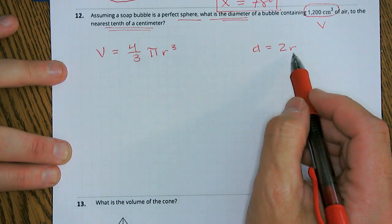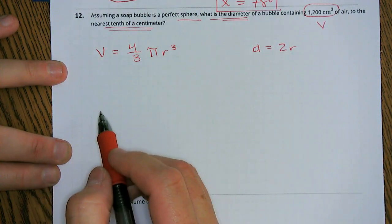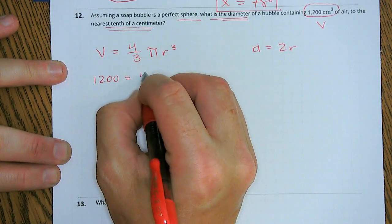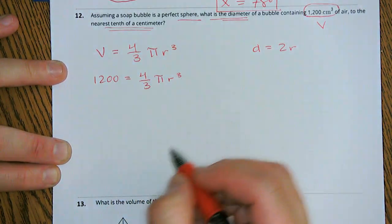So we have to kind of work our way there first. So realize we have our volume. We can substitute that 1,200 in. So 1,200 is equal to four-thirds pi r cubed.